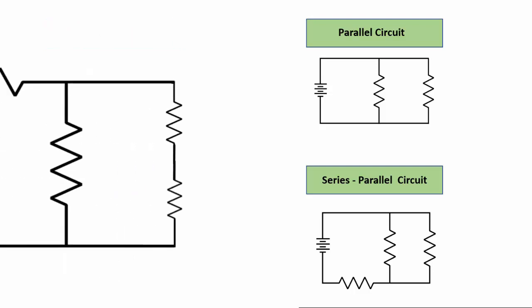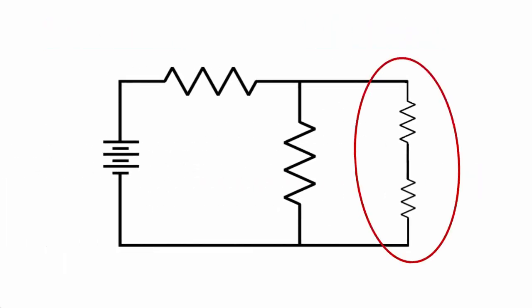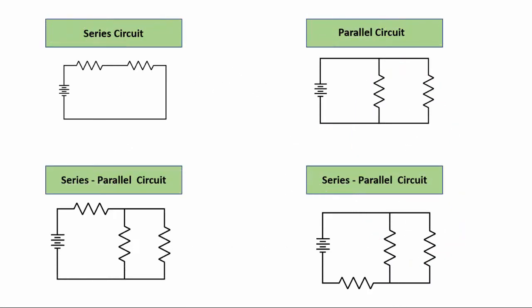We could even have inside the parallel path, instead of having just one resistor in that parallel branch, two resistors in series in the parallel branch, and it would still be called a series-parallel circuit. We'll see more on those combinations later on.